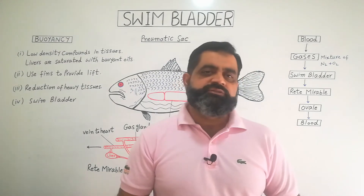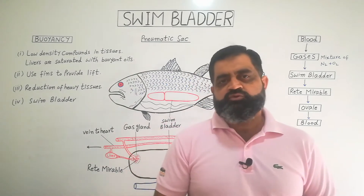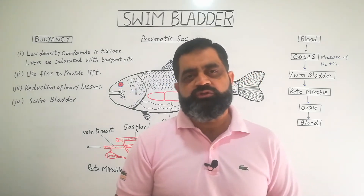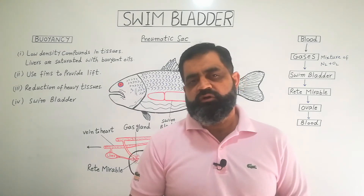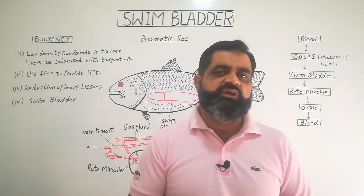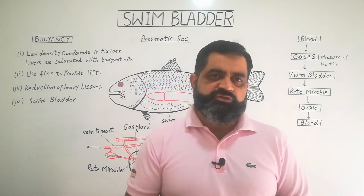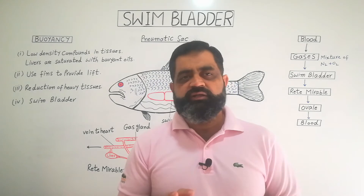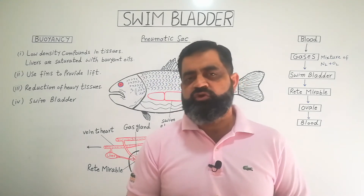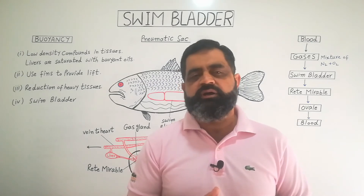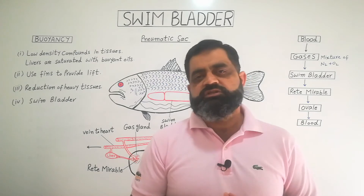Hello to all students. Today we are going to discuss swim bladder. As you know, there are two types of fishes found in water. Number one: Chondrichthyes, which are known as cartilaginous fishes. They usually do not have a swim bladder in their body and they use fins for locomotion and for buoyancy in the water.